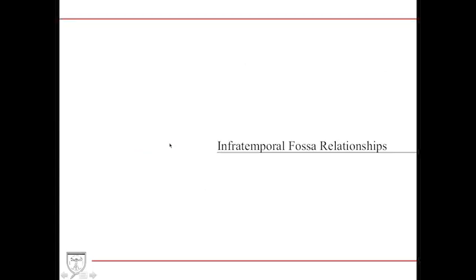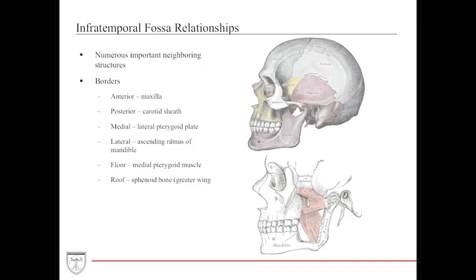We'll discuss the infratemporal fossa's bony relationships first to give you a picture of what's going on. There are many neighboring structures — bony, muscular, nervous, and arterial. The bony structures include an anteriorly located maxilla, a posterior carotid sheath ascending with the ramus of the mandible, the medial lateral pterygoid plate, the ascending ramus of the mandible laterally, the medial pterygoid muscle as the floor, and the greater wing of the sphenoid bone as the roof.